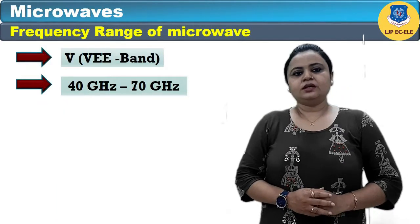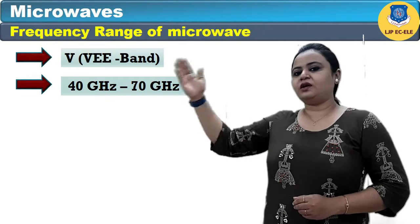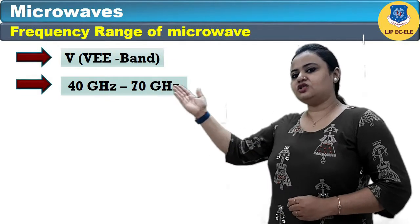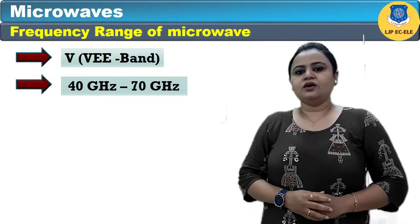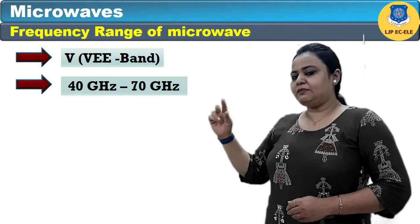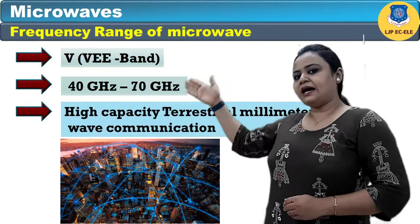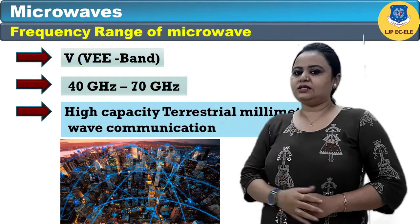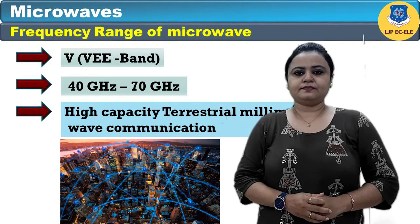The next band, ranging from 40 GHz to 70 GHz, is known as the V band. It has high capability and high capacity terrestrial millimeter wave communication.